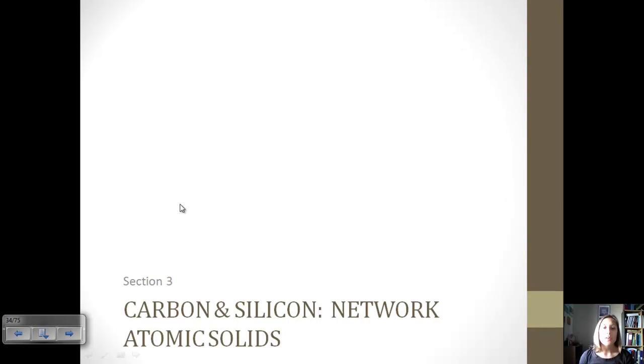So today we're going to continue with our discussion of liquids and solids, looking at section 3, which involves network atomic solids, mainly looking at carbon and silicon. And then next time we're going to discuss the other two types, which are ionic and molecular solids.